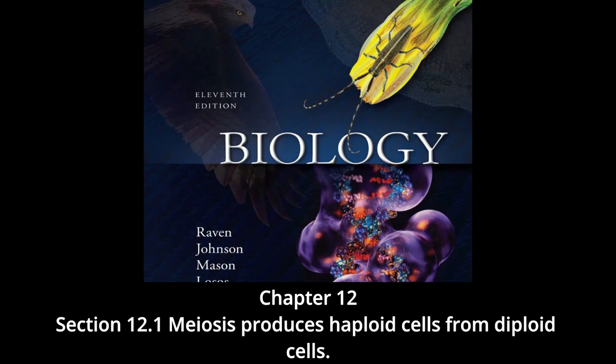The chromosome number does not explode in this way because of a special reduction division that occurs during gamete formation, producing cells with half the normal number of chromosomes. The subsequent fusion of two of these cells ensures a consistent chromosome number from one generation to the next. This reduction division process, known as meiosis, is the subject of this chapter.